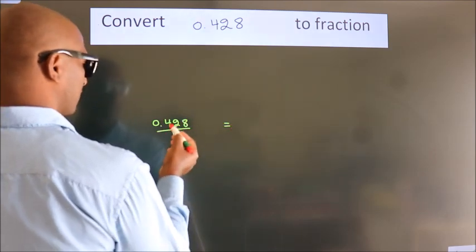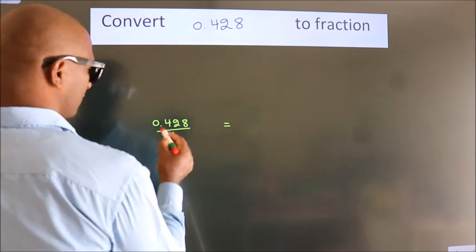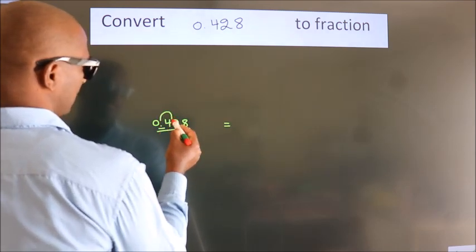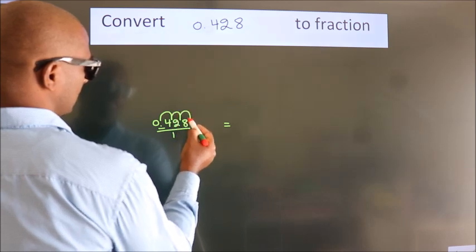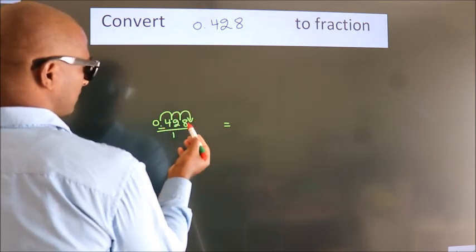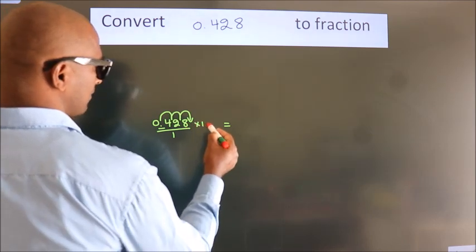To convert this to fraction, we have to move this decimal after 1, 2, 3 numbers. To move the decimal after 3 numbers, we have to multiply it with 1000.